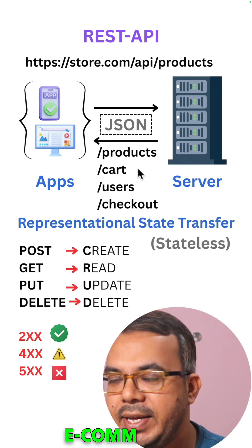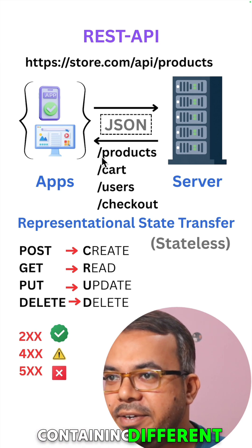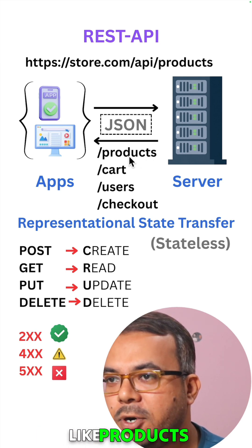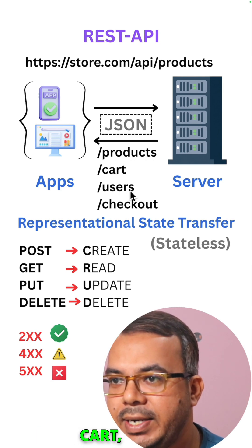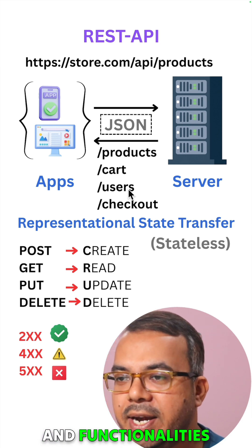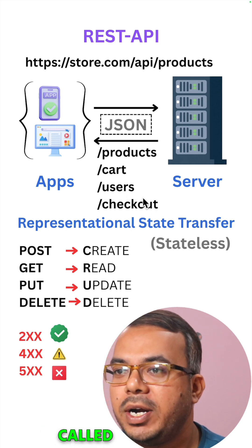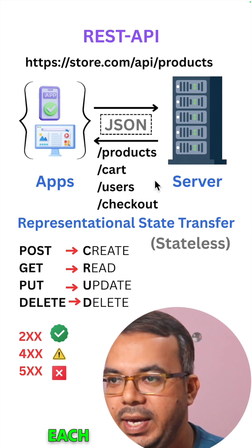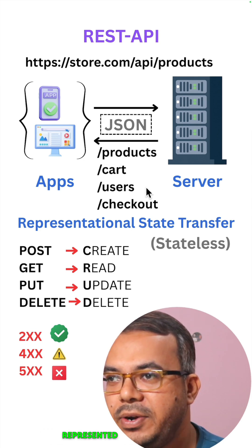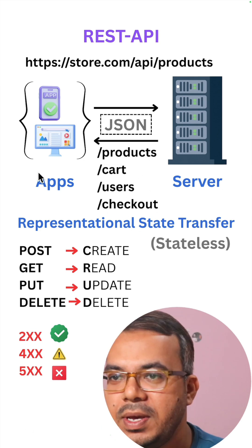Let's consider an e-commerce store containing different types of data like products, cart, and users. Functionalities like checkout are called resources. Each resource has unique endpoints represented like this.